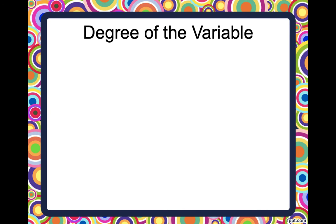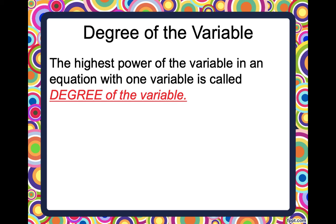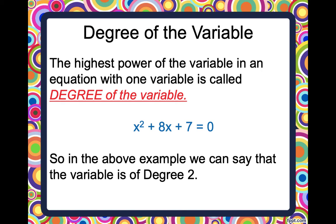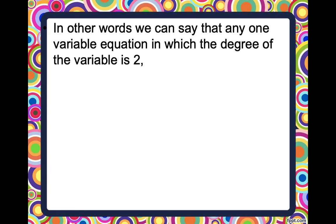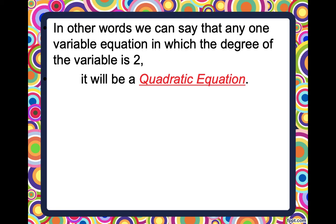Let us understand what is the degree of a variable. The highest power of the variable in an equation with one variable is called the degree of a variable. We saw in the previous example that the degree of the variable x was 2. In this example as well, we have the degree of x as 2 because x² plus 8x plus 7 equals 0, and x is being squared so the power becomes 2. So we can say that any one-variable equation in which the degree of the variable is 2 will be a quadratic equation.